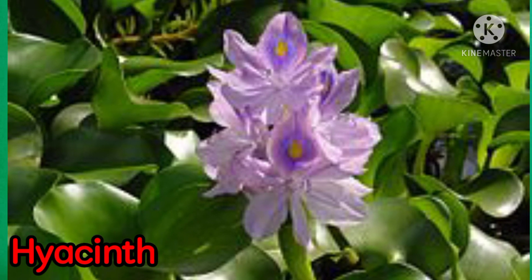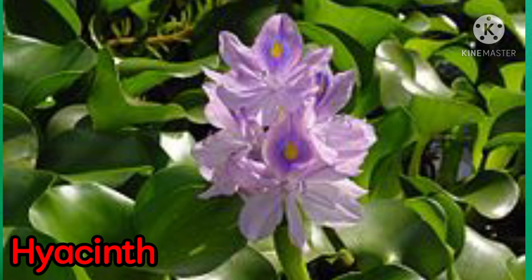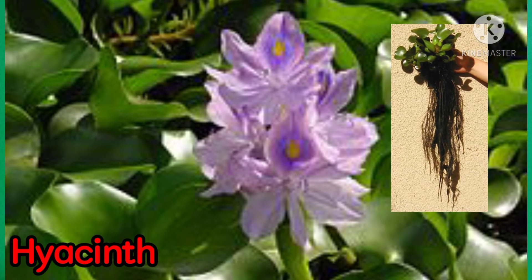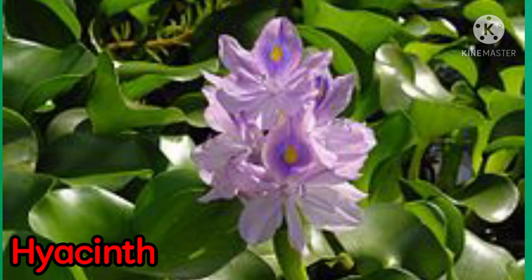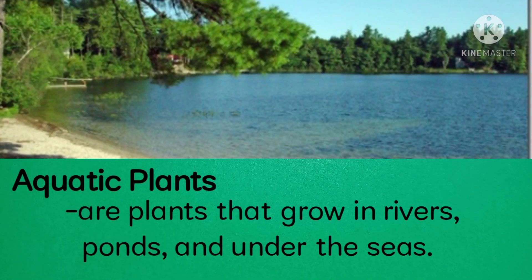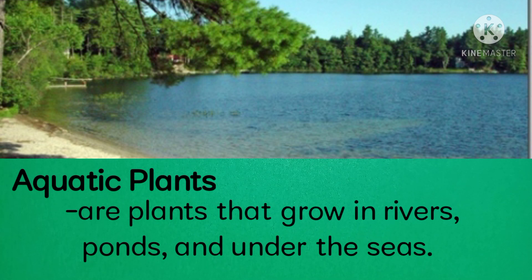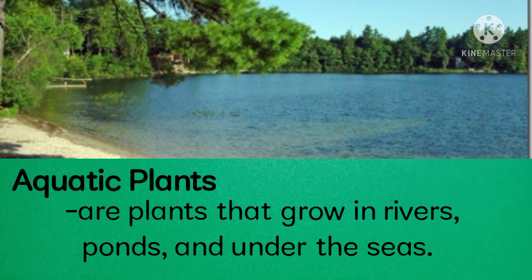Leaf stalks of water hyacinth have air-filled tissues to make it float, and they have long roots which enable them to reach the soil underwater. Aquatic plants are plants that grow in rivers, ponds, and under the seas. These plants are sources of food and oxygen for animals living in water. Most plants that live in water have soft, hollow stems and light fruits.